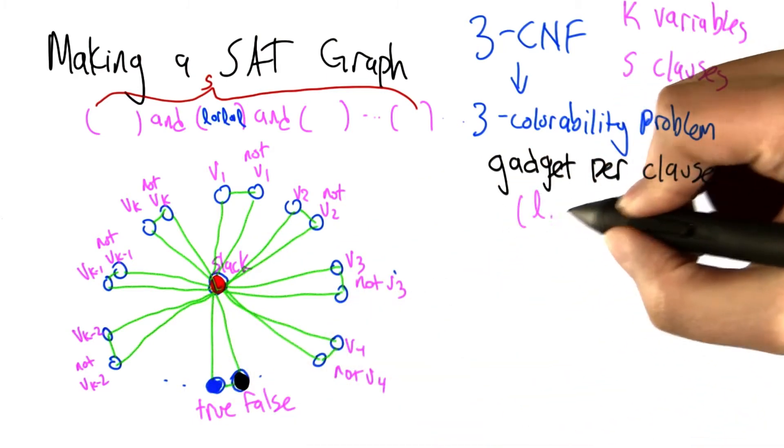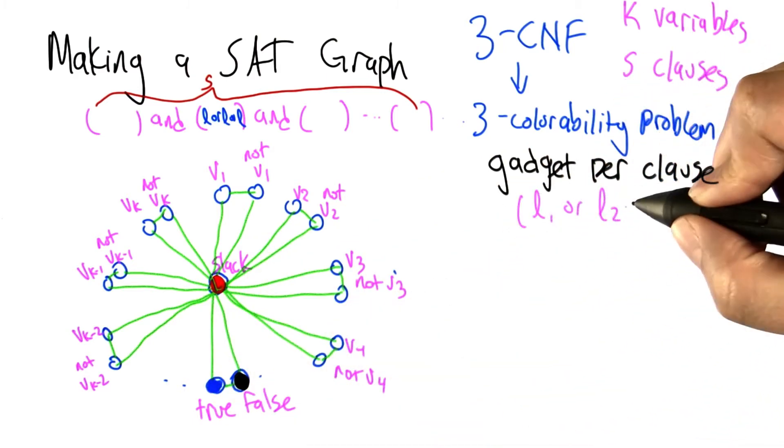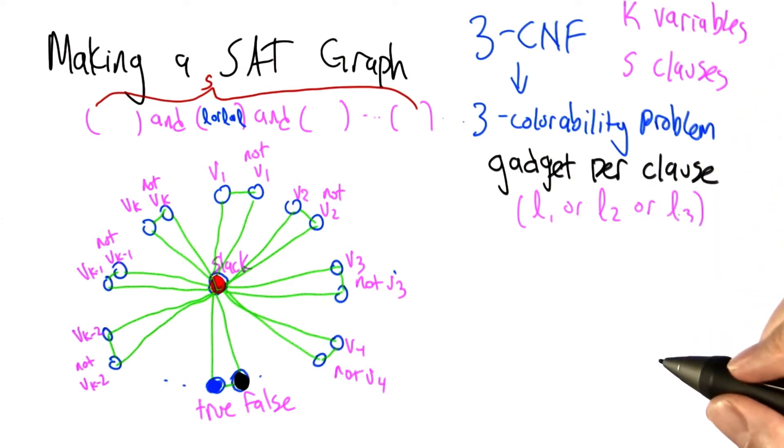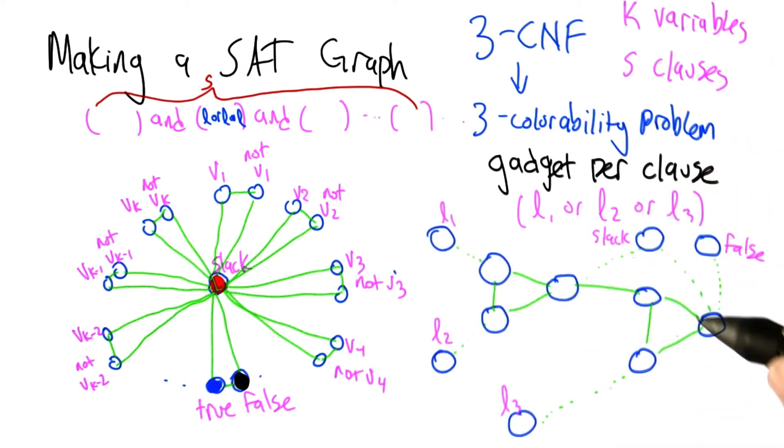So let's imagine that we've got this is our clause L1, L2, L3. So there's a couple different ways of making this gadget. Here's one that makes sense to me.